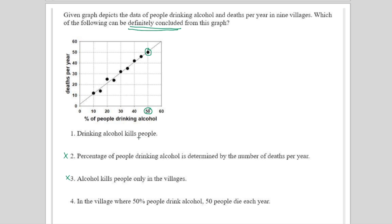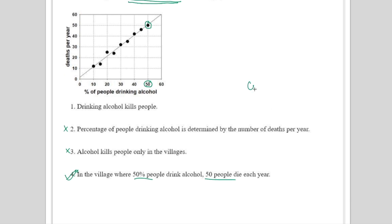The only thing you can say for sure is that in the village where 50% of people drink alcohol, 50 people die each year. That is what the data is saying — you should not conclude things from your own side. This is the answer they have given, and it is correct. This question cannot be challenged.